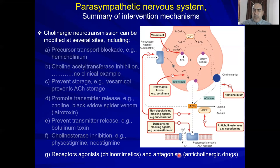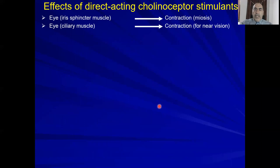Some drugs activate and some inhibit muscarinic and nicotinic receptors at the receptor level. Regarding the effects of direct-acting cholinergic receptor stimulants: in the eye, they cause contraction of the iris sphincter muscle — producing miosis (constriction of the pupil). In the ciliary muscle, they cause contraction, accommodating for near vision.